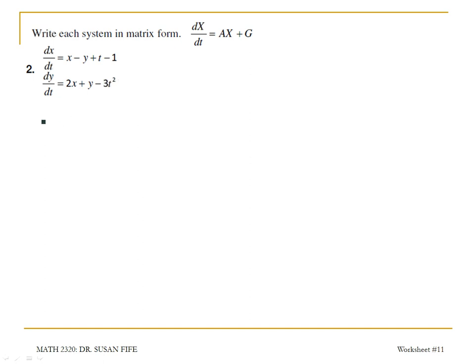In matrix form, I'm going to write this left side as x prime. Then my coefficient matrix, in the first equation I have 1x and negative 1y, in the second row I have 2x and 1y.